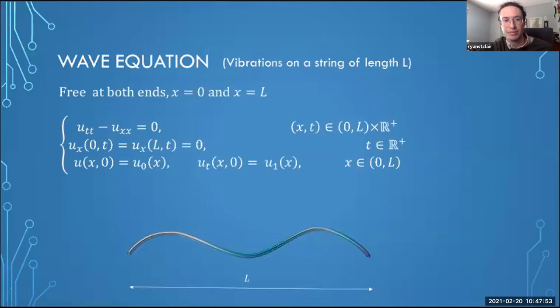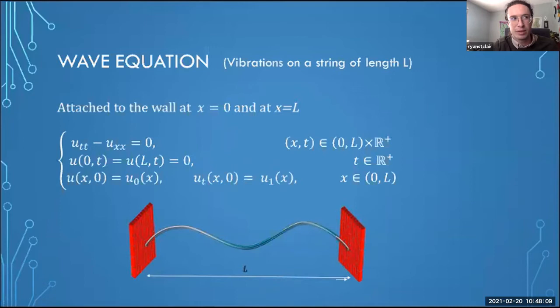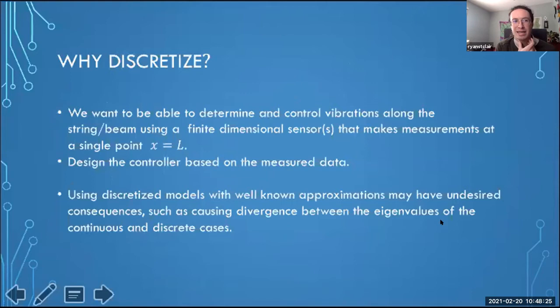I'll briefly mention a third boundary condition — clamped at both ends, the pure Dirichlet condition — which was solved by Sydney Knew in a 498 project the year before mine, and which Emma also addressed in her presentation. Now, why are we discretizing these equations? In their continuous form as PDEs, they are explicitly solvable and we can find the eigenvalues for them.